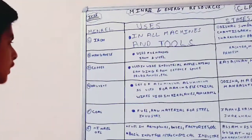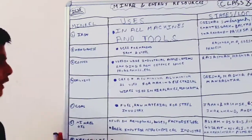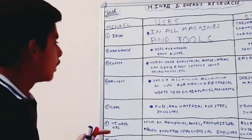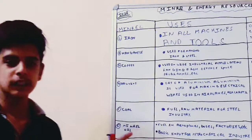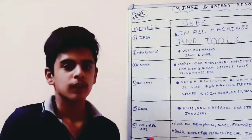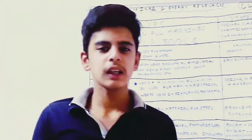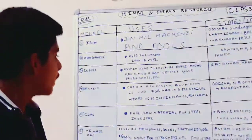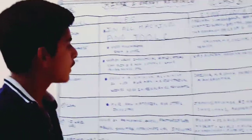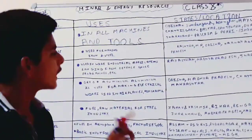Now copper. Copper is used in industrial applications ranging from defense space programs, etc. Defense space programs like spacecraft, etc. these are used. Now the states where they are formed are Rajasthan, Madhya Pradesh, and Jharkhand.